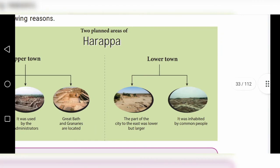In the lower town, the eastern part of the city was lower but larger. It was inhabited by common people.